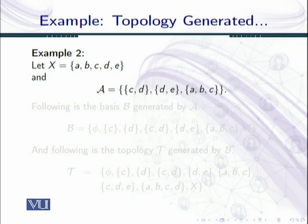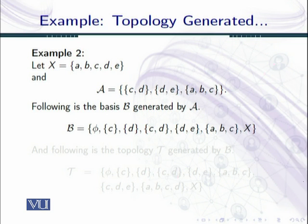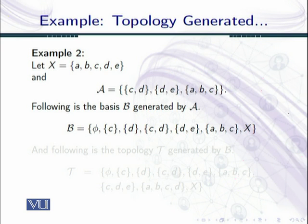So let us generate the basis for the topology on X. We have the following basis: φ can be generated by taking the intersection of {d,e} and {a,b,c}; {c} can be generated by taking the intersection of {c,d} and {a,b,c}; {c,d} automatically comes in as it is a sub-basis element; {d,e}, {a,b,c} similarly come in; and X is generated by running the intersection over the empty class.